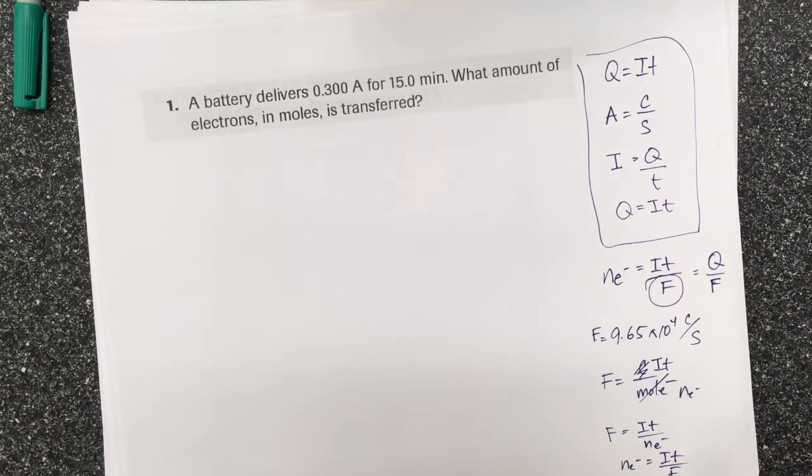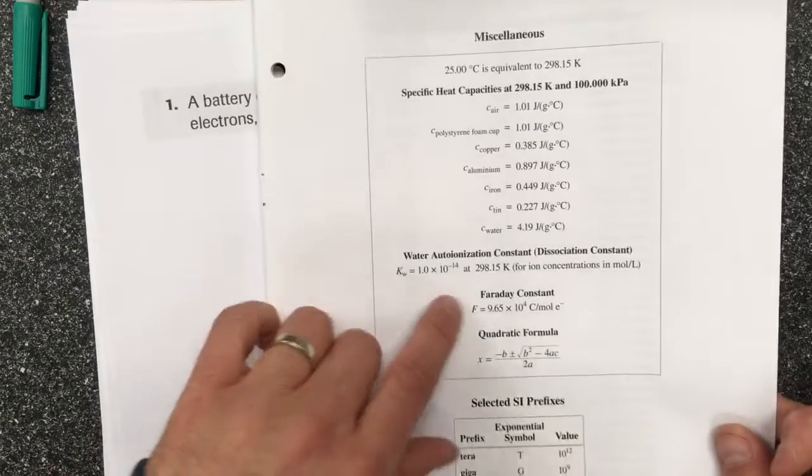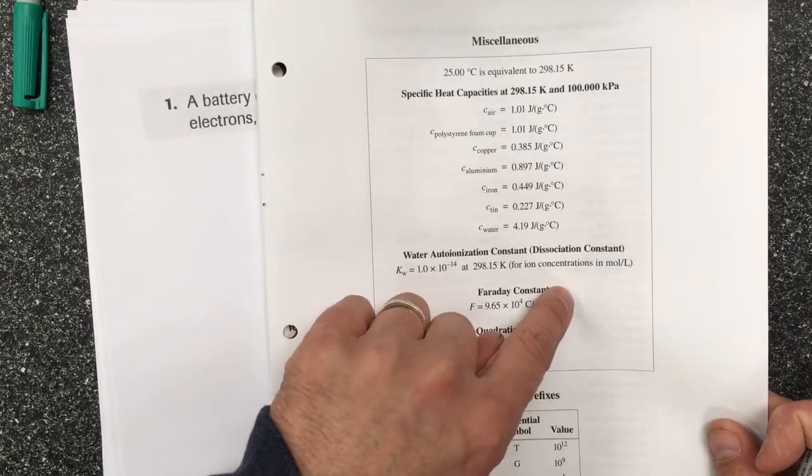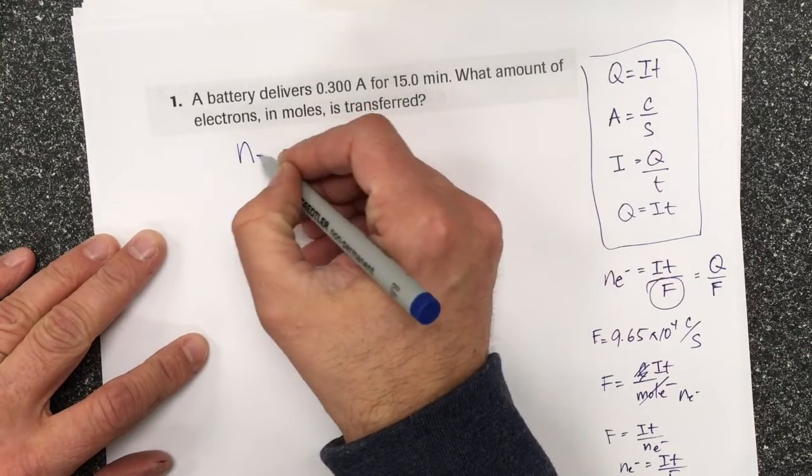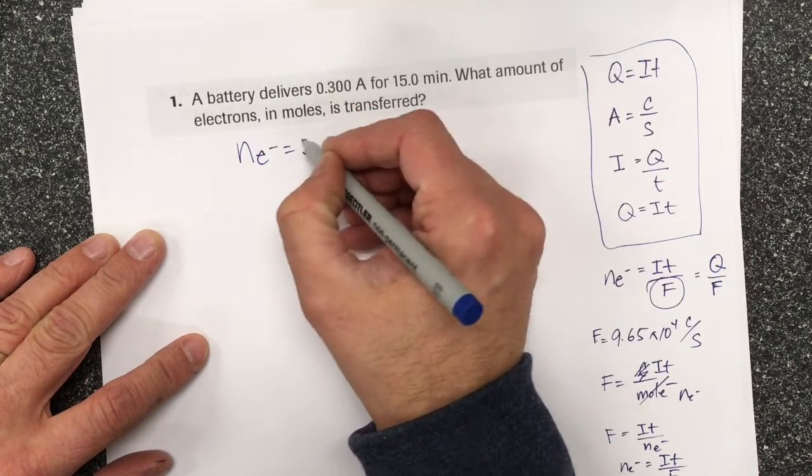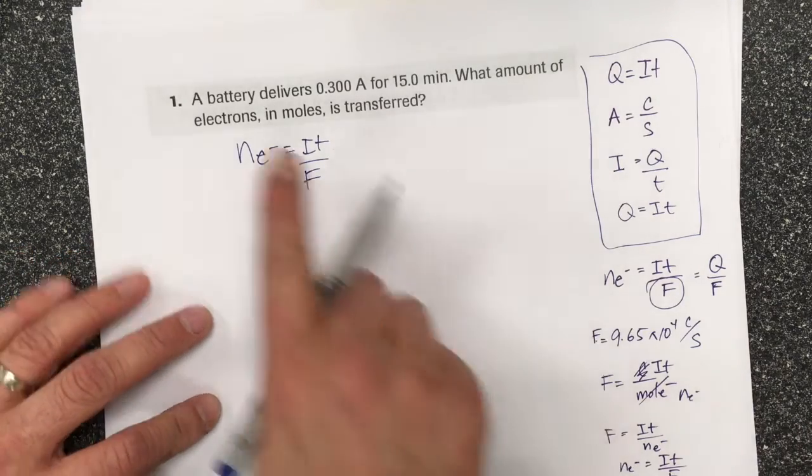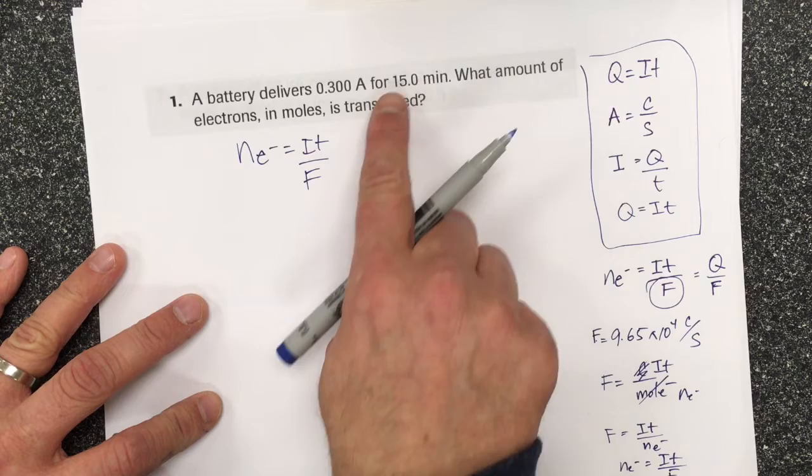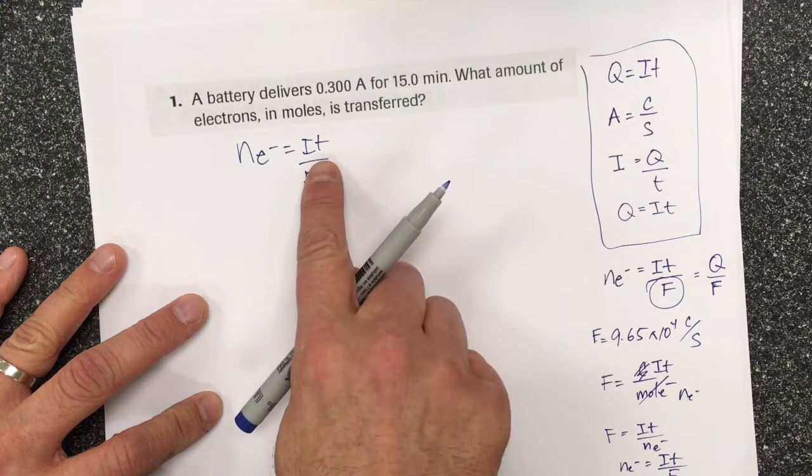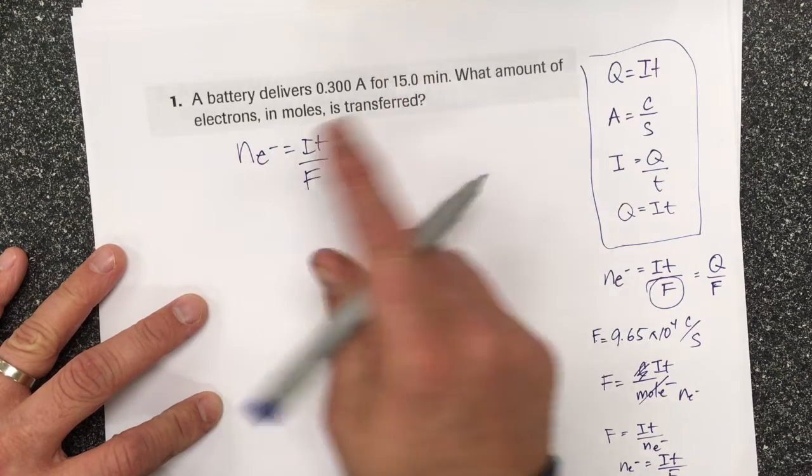Now I'm doing a little bit of jumbling around, but essentially this has hidden in it the equation we need. So our equation that we're going to use here is the number of moles of electrons equals current times time divided by Faraday's constant. And so I've got the current, I've got the time, but the time isn't in seconds and they want the number of moles of electrons.